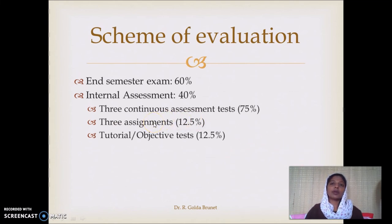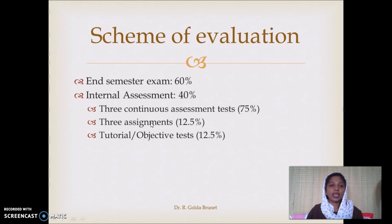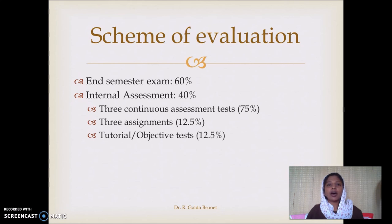As usual, the end-semester exam contributes 60% of marks — that is a 3-hour written closed-book exam. Internal assessment is 40%, which is 30 marks absolute. Internal assessment consists of 3 exams you should write; each exam is a 90-minute closed-book exam. The average of all 3 exams gives 30 marks.